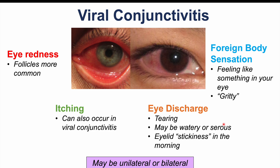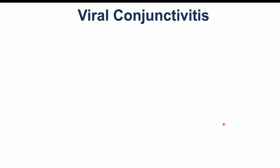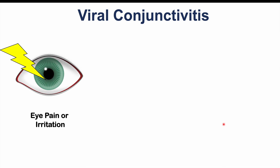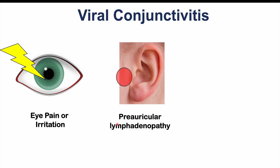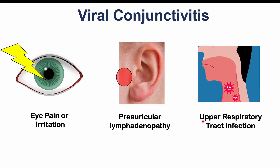Viral conjunctivitis can be either unilateral or bilateral. Other associated signs and symptoms include eye pain or irritation, and preauricular lymphadenopathy — a lymph node right in front of the ear that is usually swollen and tender. This is actually a common finding in patients with viral conjunctivitis. Patients may also have a concomitant upper respiratory tract infection, like a common cold, or may have recently had a common cold that resolved before the viral conjunctivitis appeared.